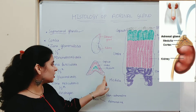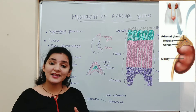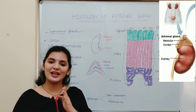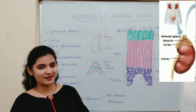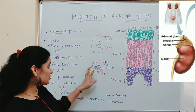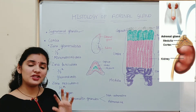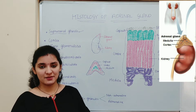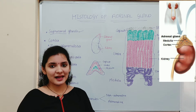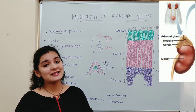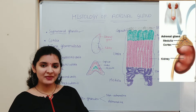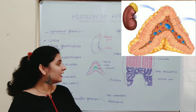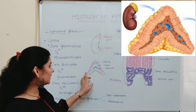The adrenal gland is a crescentic-shaped organ, though its shape varies between the left and right sides. The left adrenal gland, present on the left kidney, is crescent-shaped, whereas the right adrenal gland is exactly triangular in shape.